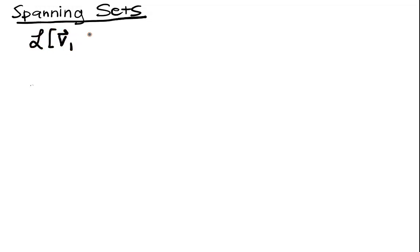So this set, script L, square brackets, V1 all the way up to Vm, I'm going to let this denote the set of all linear combinations of my Vs.